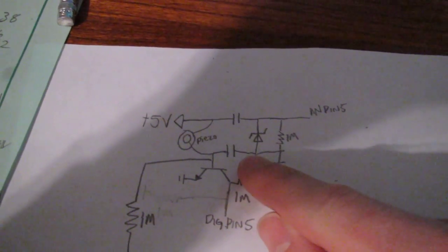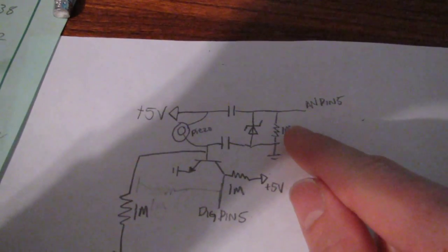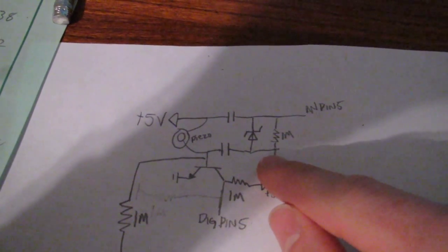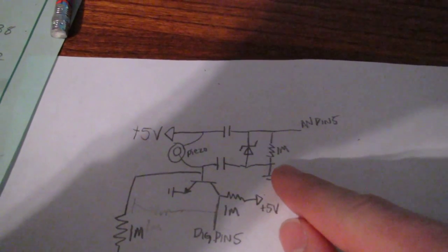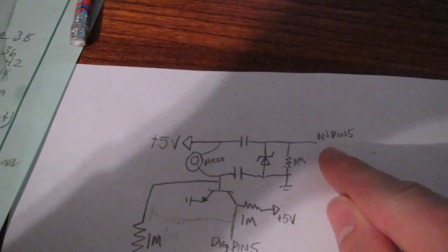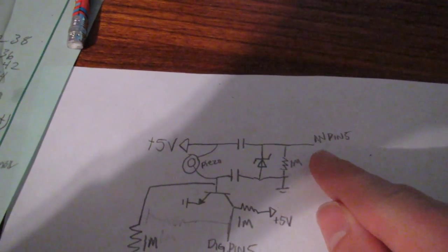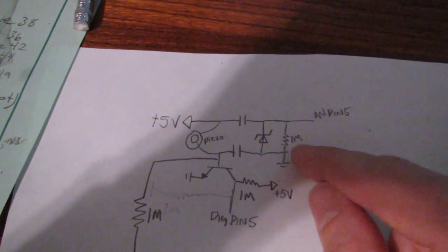We're using a Zener diode to protect the pin from anything greater than 5 volts. And the 1 megaohm resistor sets the impedance, because I think that's probably a FET input. So it's going to float if you don't put this on here.